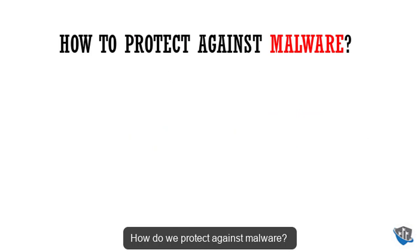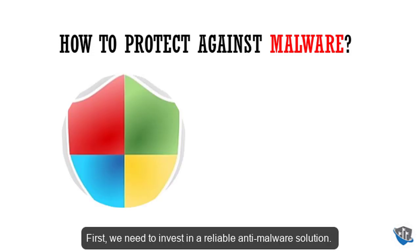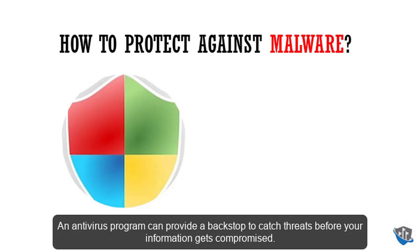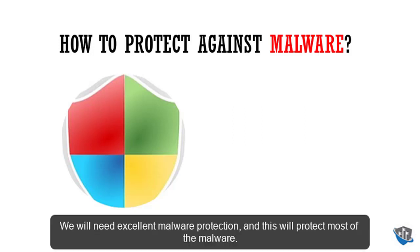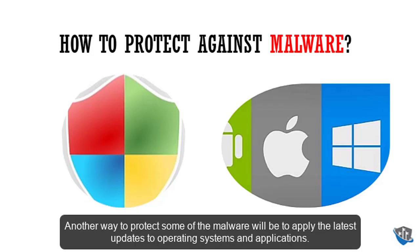How do we protect against malware? First, we need to invest in a reliable anti-malware solution. An antivirus program can provide a backstop to catch threats before your information gets compromised. Modern antivirus companies now offer managed endpoint protection, which can even protect against zero-day attacks and advanced persistent threats. Another way to protect against malware is to apply the latest updates to operating systems and applications.